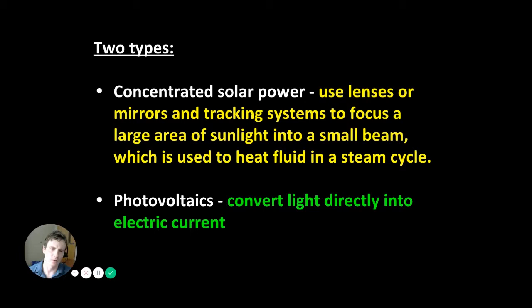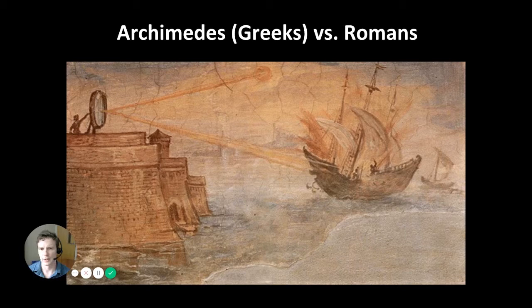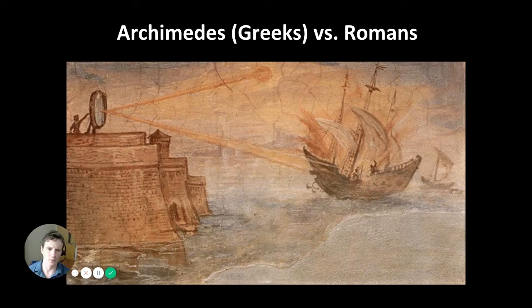The whole idea with concentrated solar power is to take incoming solar irradiation and focus it on one specific location to generate an extreme amount of heat — in this case to convert a working fluid into steam in order to spin a turbine and generate electricity.